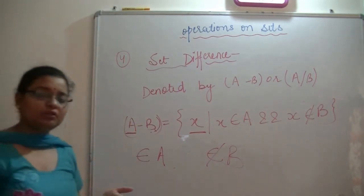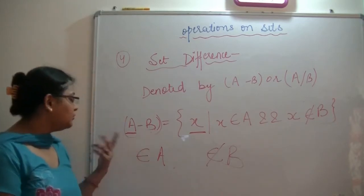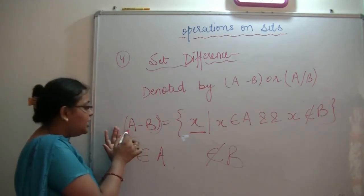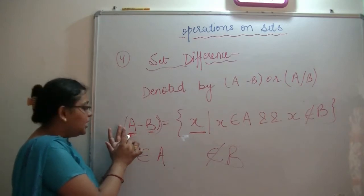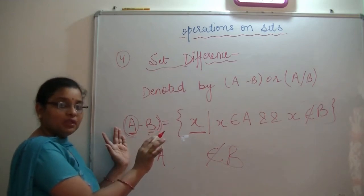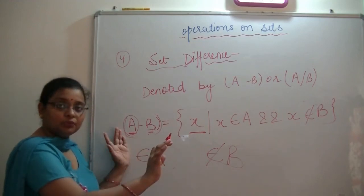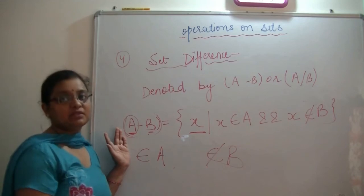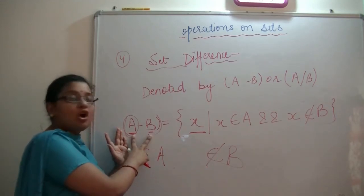Because we find the difference, we look at all the elements that we have in A and remove the elements that belong to B. So in set A, we remove the elements of B. If we remove B from A, we remove all the common elements.